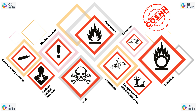Under COSHH regulations, employers are required to assess the risks associated with substances used in their workplace and take steps to control and minimize those risks. This involves identifying the hazardous substances present, evaluating the potential harm they could cause, implementing control measures to reduce exposure, and providing training and information to employees about the risks and how to protect themselves.